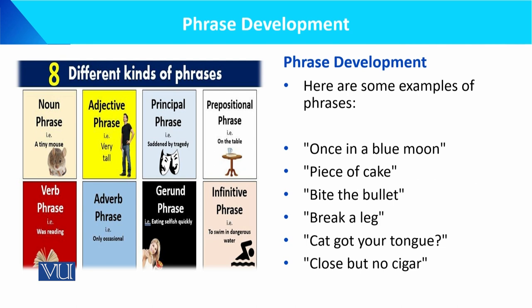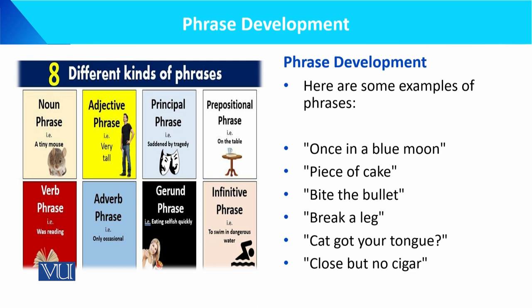تو یہ different examples میں نے آپ کو phrases کی بتائیں اور different types of phrases کی بھی examples بتا کر یہ clear کیا کہ ہم phrase development کیسے کرتے ہیں اور اس کو اپنی language میں کس طرح use کرتے ہیں۔ اس کے لئے ہمیں correct grammar rules کا علم ہونا چاہیے اور sentences کو جوڑنے کا صحیح sense ہونا چاہیے تاکہ ہم grammar کے اصولوں کو follow کریں۔